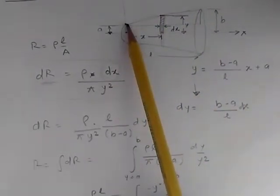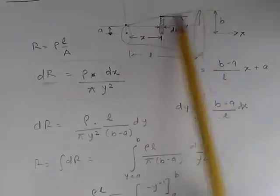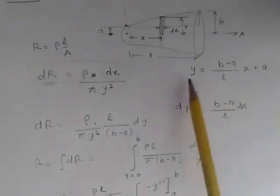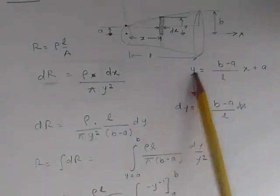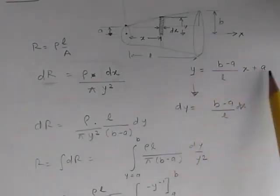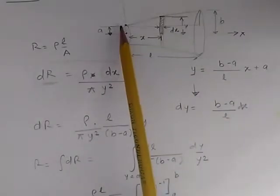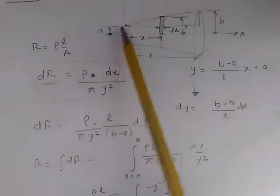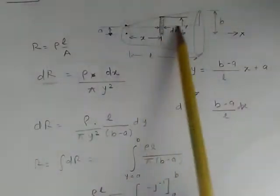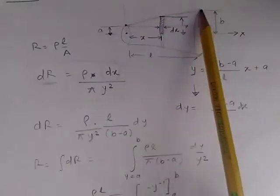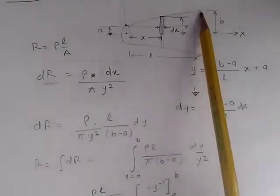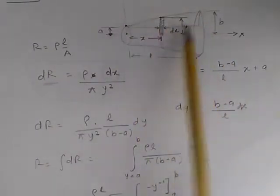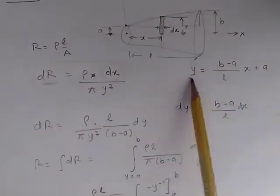We're given that this is linearly varying. What does linearly varying mean? It means that the value of y can be expressed in terms of x as a straight line. What does that straight line equation look like? y = mx + c, where c is the intercept on the y-axis, which is A in this case, and m is the gradient or slope of this line, which we can find by the change in y, which is B - A, divided by the change in x, which is L.